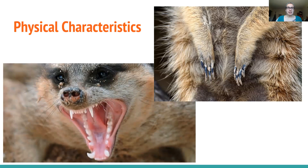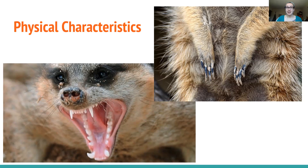They're also well adapted for digging — they dig to get at food and also to build their burrows and tunnel systems. They have big, sharp, long curved foreclaws, which are the claws on the front feet. That allows them to dig really efficiently and quickly. The claws on their back feet aren't quite as long, but they use their back feet and tails for balance while standing up.